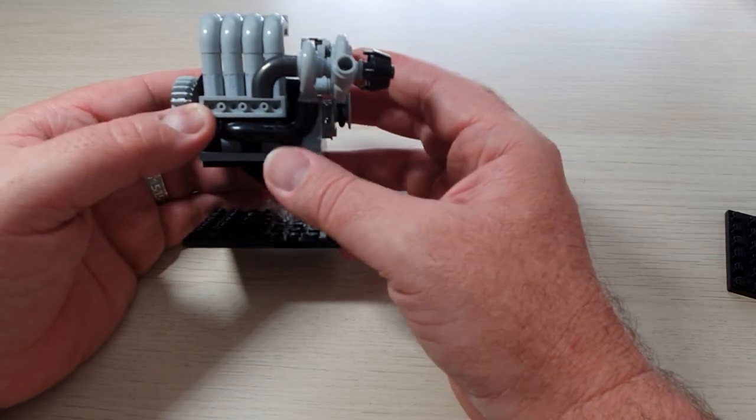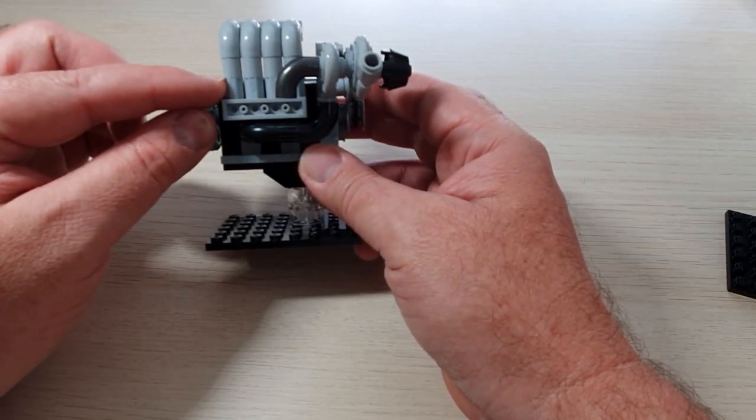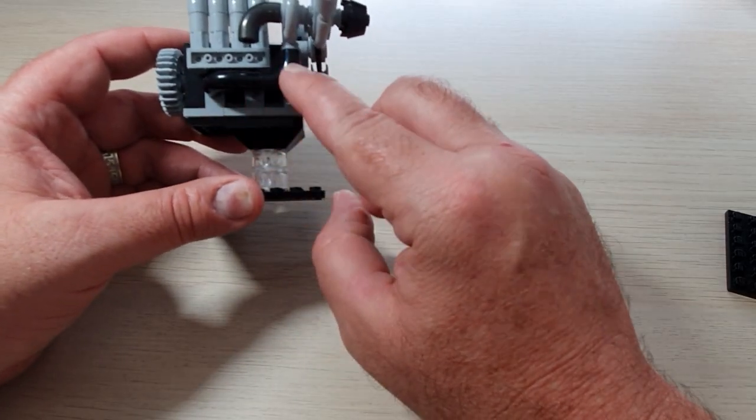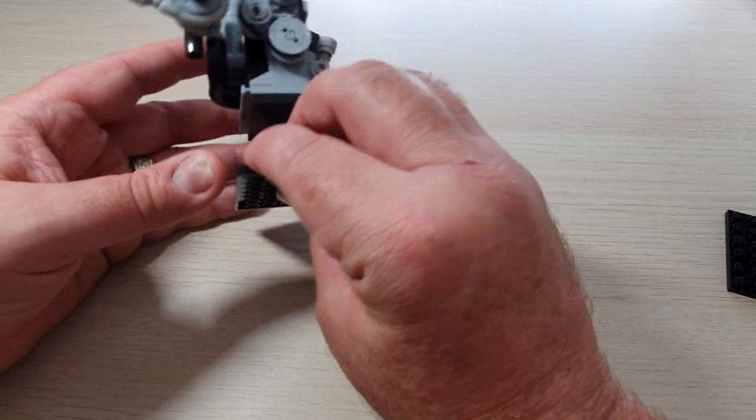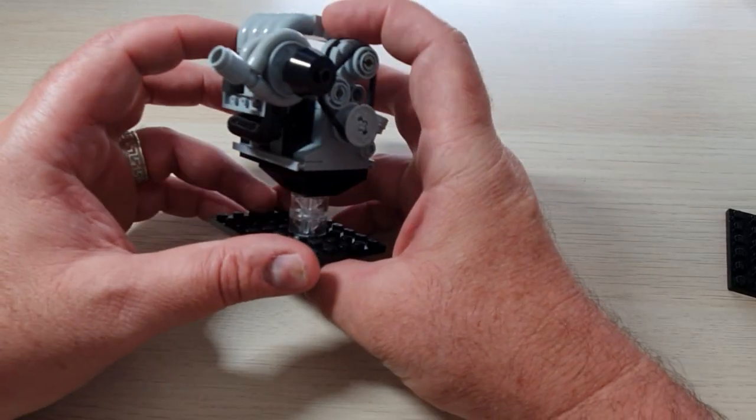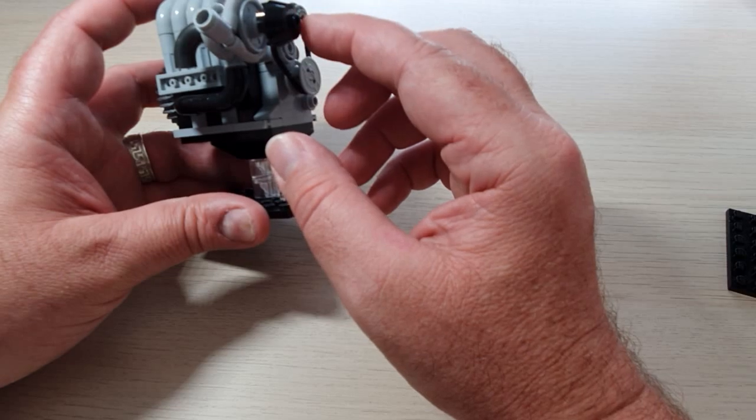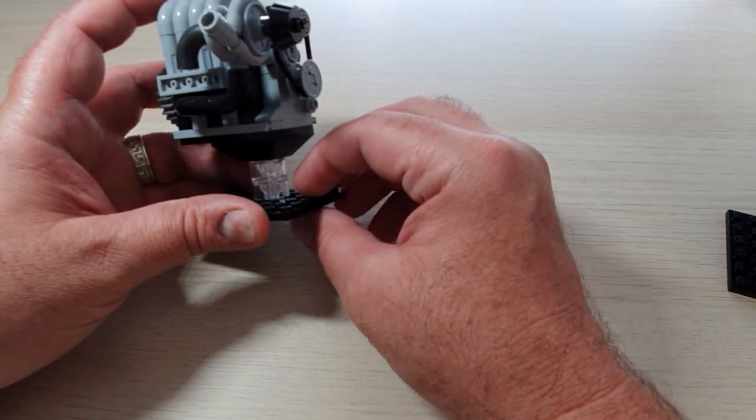But I changed out the collars for sleeves here. I made my own exhaust manifold here. The compressor, bigger compressor on the front here. Different style filter.